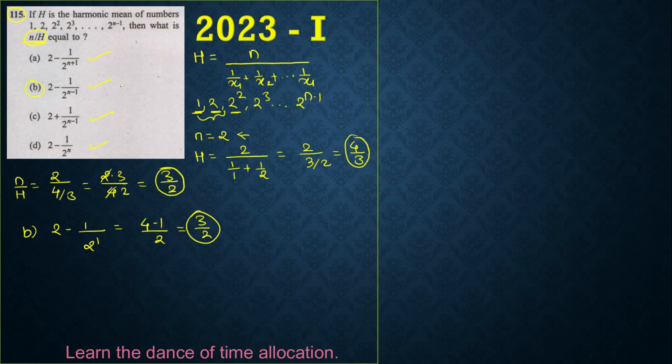Option B is your correct answer. Now you can cross verify for the first option as well. For option A: 2 minus 1 upon 2 raise to 2 plus 1 becomes 3, so it becomes 2 minus 1 upon 8, which gives you 15 by 8. Any of these options like A, C, and D will not give you 3 by 2.